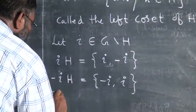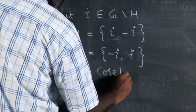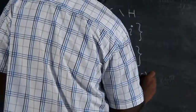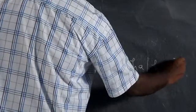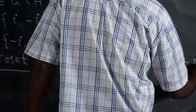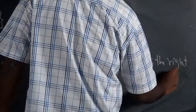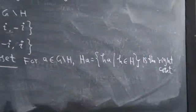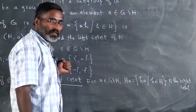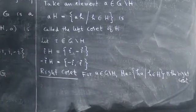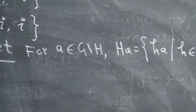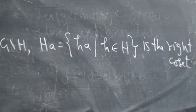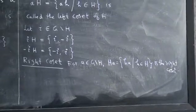The right coset is defined as: for some A in G not in H, H·A — that is, {h·A | h ∈ H} — is called the right coset. Here I have multiplied from the right. These two cosets need not in general be the same, but in this particular example they are the same because this is an abelian group, so multiplying from the left is the same as from the right. For an abelian group, left coset and right coset are the same, but in general they need not be.